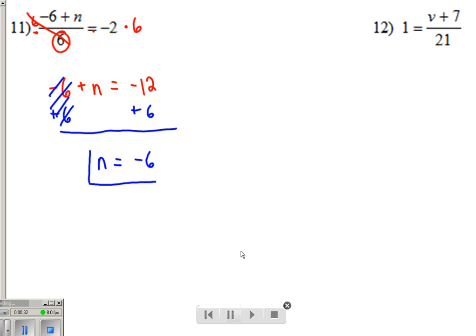Number 12, since we're dividing that whole right side, over here on number 12, since we're dividing the whole right side by 21, let's multiply the whole right side by 21, and then to keep the balance of the equation,